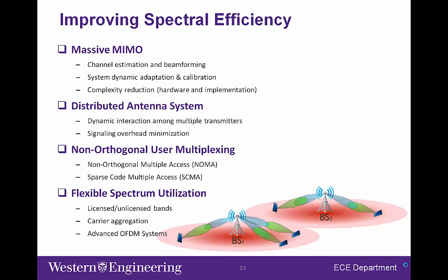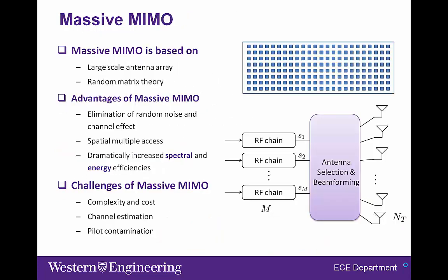To improve spectral efficiency in 5G, we can use massive MIMO, distributed antenna systems, non-orthogonal user multiplexing including NOMA and SCMA, and flexible spectrum utilization. The massive multi-input multiple-output system is based on large-scale antenna arrays and system design based on random matrix theory. The advantage of massive MIMO is spatial multiple access and dramatically increased spectral and energy efficiencies. However, the challenge is dramatically increased system complexity and cost due to the requirement of multiple RF chains.